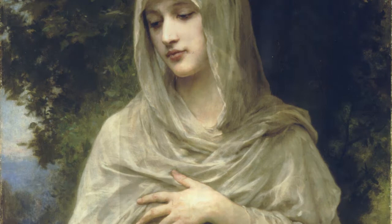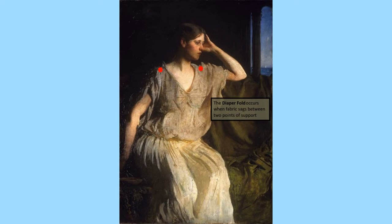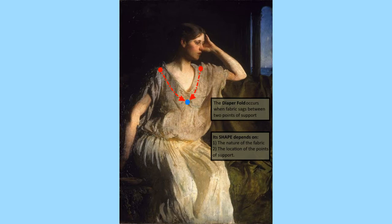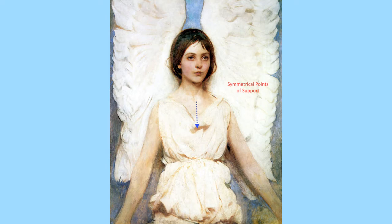The diaper fold occurs when fabric sags between two points of support. The point of intersection is the lowest and most curved, or sharpest, point found in this type of fold. Its shape depends on the nature of the fabric and the location of the points of support.